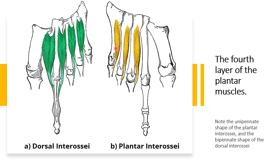The plantar interossei originate from the medial side of metatarsals three to five and attach to the medial side of the phalanx of digits three to five. They adduct digits three to five and flex the metatarsophalangeal joint. Innervation is the lateral plantar nerve.